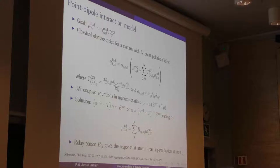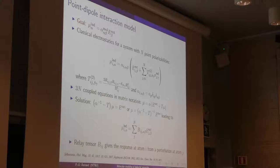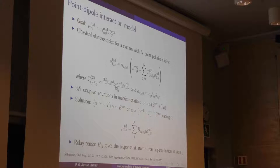The model we work with represents each atom as a system characterized by a point polarizability. That means if you apply a field to the system, each particle is induced — you get an induced dipole moment. They in turn induce the rest of the system and you get a set of coupled equations. So the induced dipole moment of one atom is the polarizability times the applied field plus the field of all other atoms in the system.